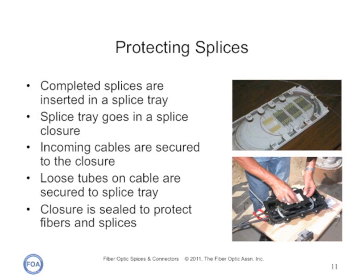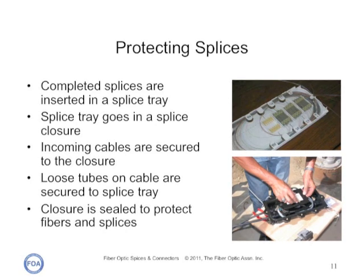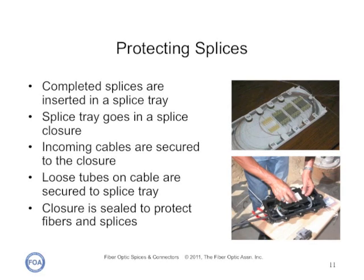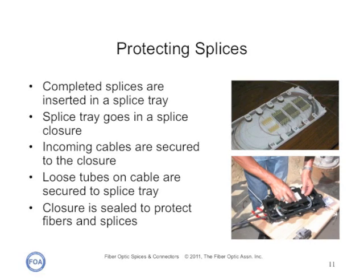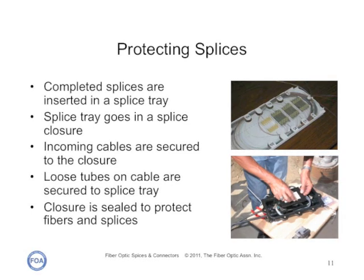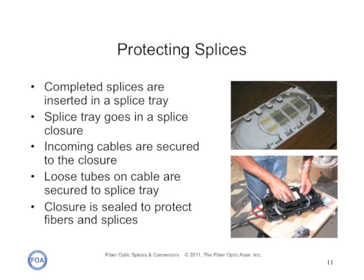After the splices are made, they need protection from the environment — they don't have all the mechanical hardware of a connector. Completed splices are inserted in a splice tray, and the splice tray goes in a splice closure. The incoming cables are secured to the closure, and on loose tube cables, the tubes of the cable are secured to the splice tray. After all the splices are completed and the trays are placed in the closure, the closure is sealed to protect the fibers and splices from the environment.